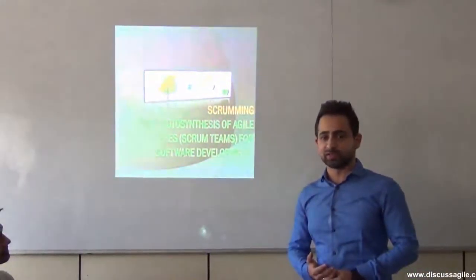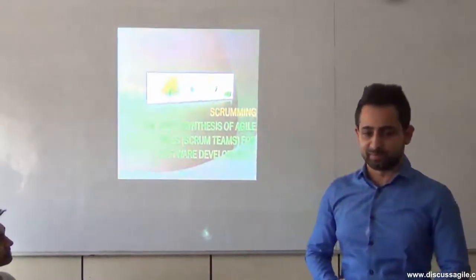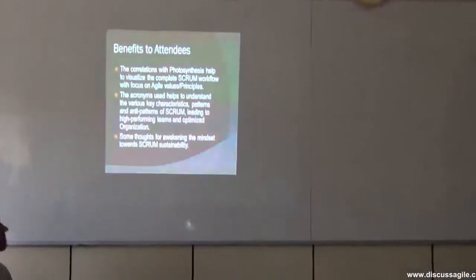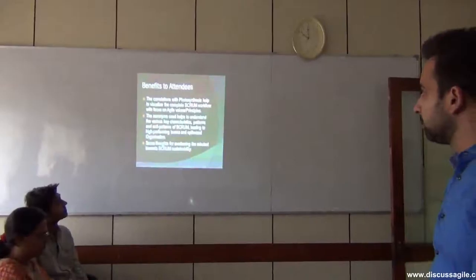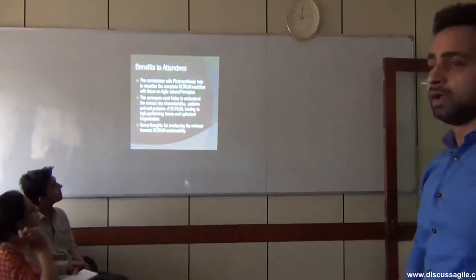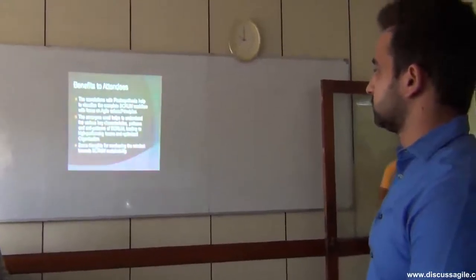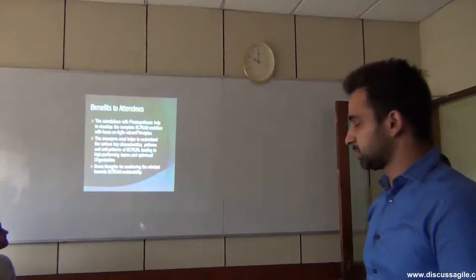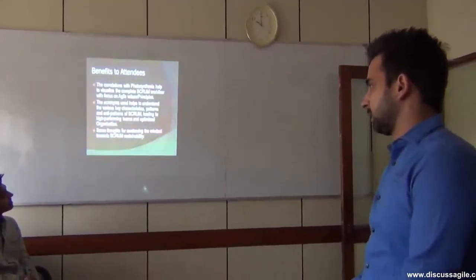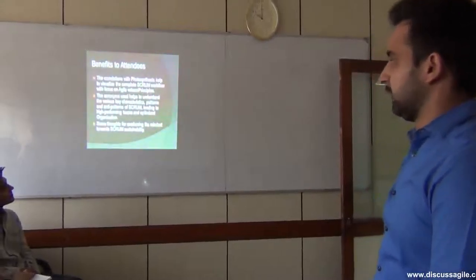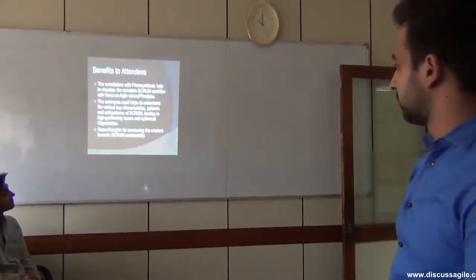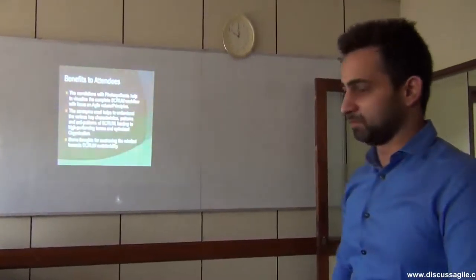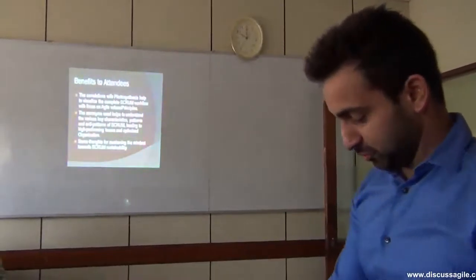I think everybody here is aware of photosynthesis, so I'll just touch on the basics and then move forward. It's a correlation with photosynthesis which helps us visualize the complete Scrum workflow and focus on agile principles and values. I've used various acronyms to identify key characteristics, patterns, and anti-patterns which I've experienced in my past five years of career that have helped me convert various teams into high-performing teams and optimize the organization as a whole. At the end there will be some thoughts to awaken our minds.